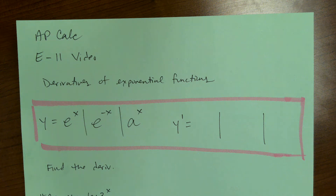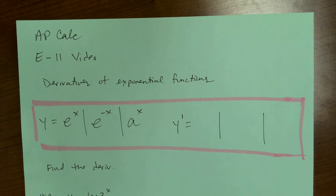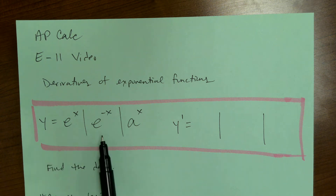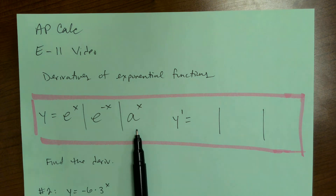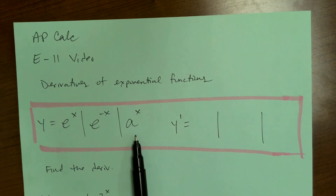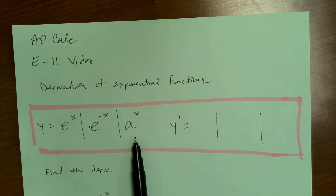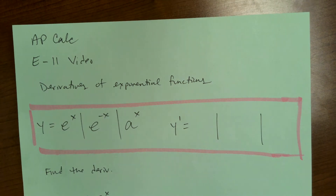Here's E-11, which is going to involve derivatives of exponential functions. The three exponential functions we're going to look at are y equals e to the x, e to the negative x, or a to the x, where a could be any base — like 5, 7, 9 — any positive base.